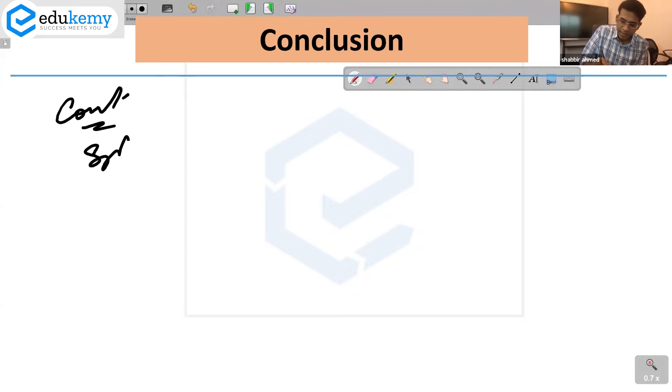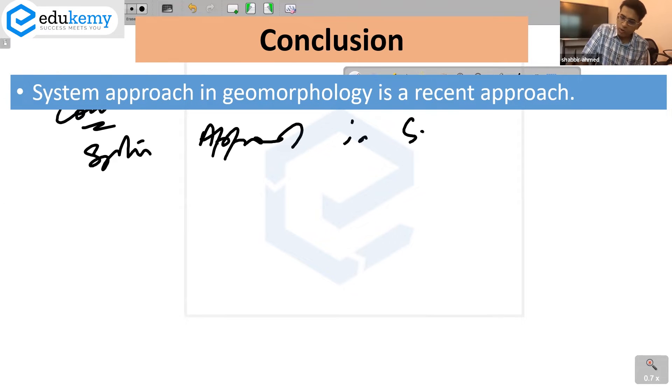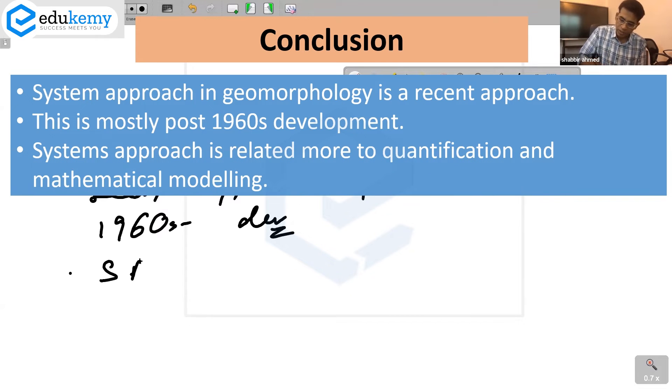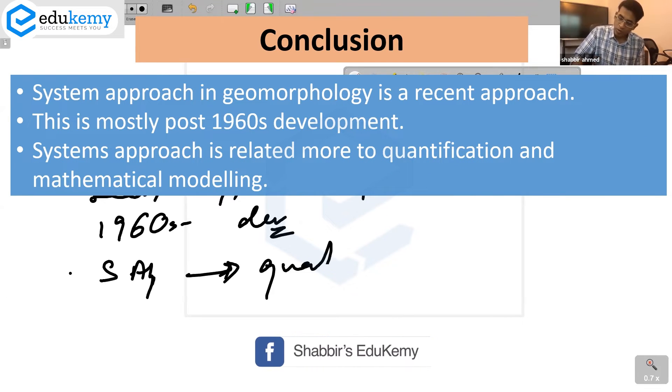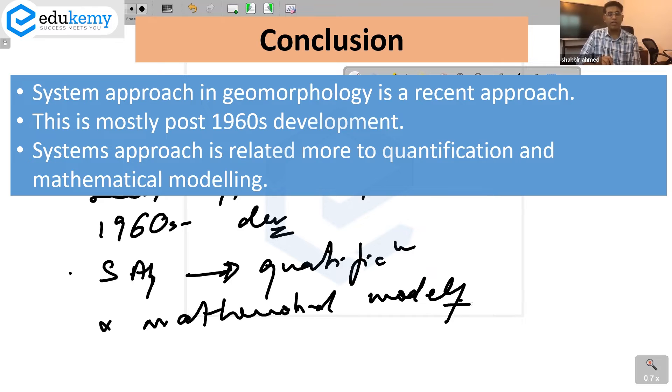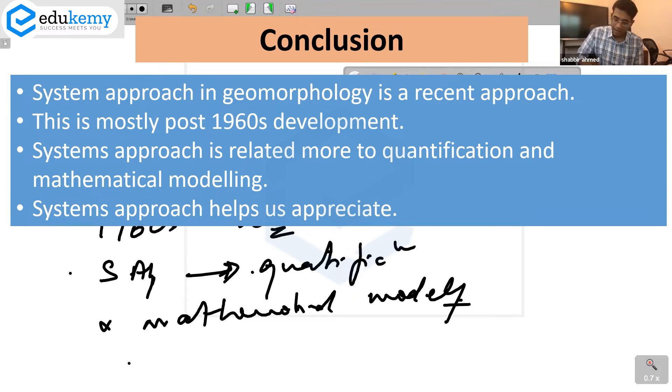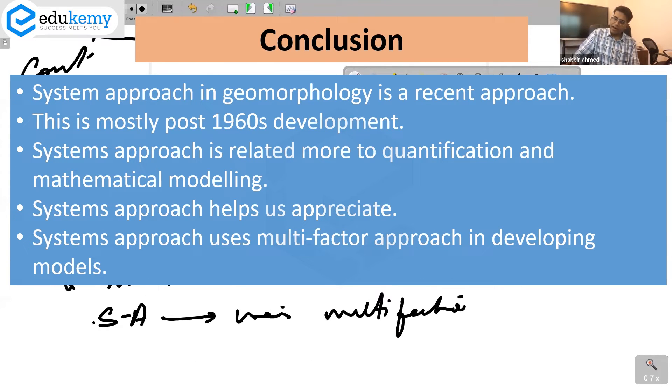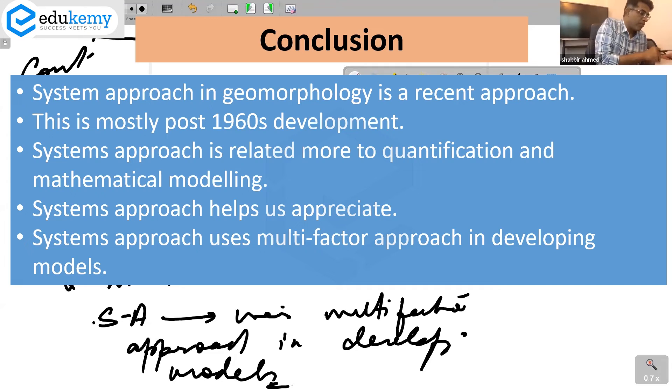Your conclusion - we can talk about that systems approach in geomorphology is a recent approach, mostly post-1960s development. Systems approach is related more to quantification and mathematical modeling. It helps us appreciate systems approach development and uses multi-factor approach in developing models.